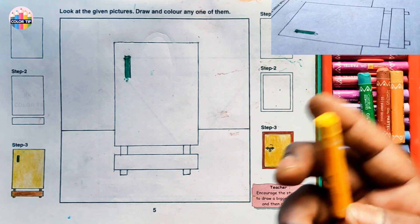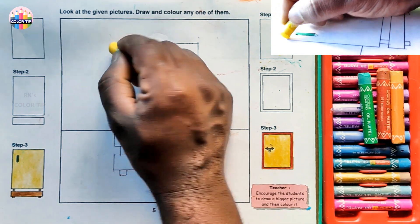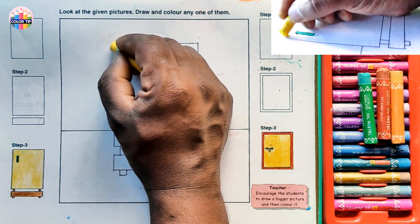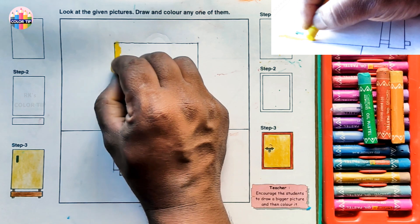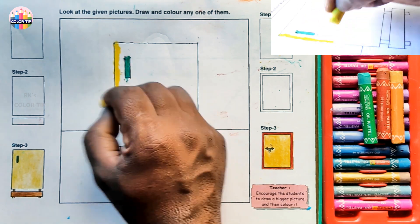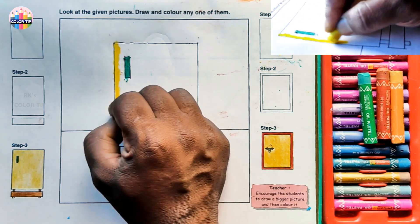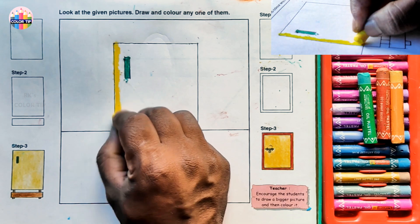Now take yellow color, fill it. As I told you, just fill it with vertical direction, up and down. Fill near the lines carefully without going out of the line.